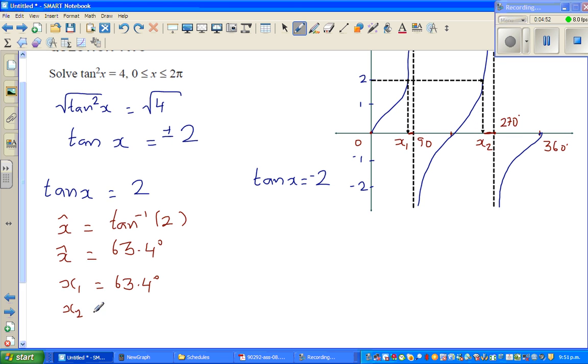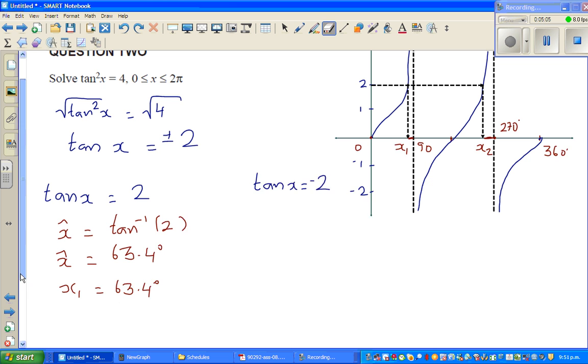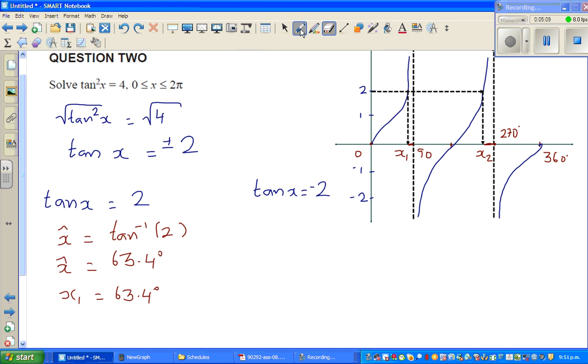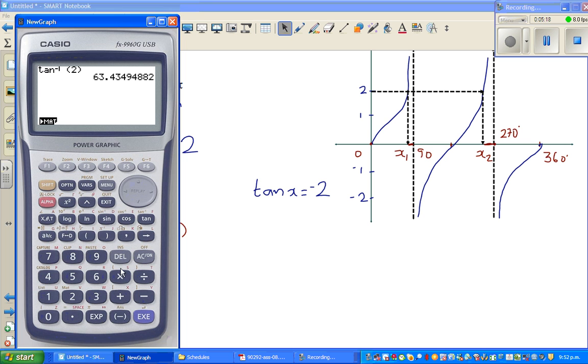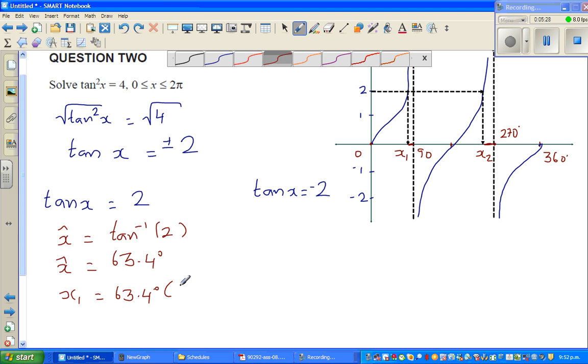This is 63 from 0, so how much away from 90? Let me use a calculator. So 90 minus 63.4, which is 26.6. So I'll write that in the bracket. This is 26.6 degrees away from 90 degrees.